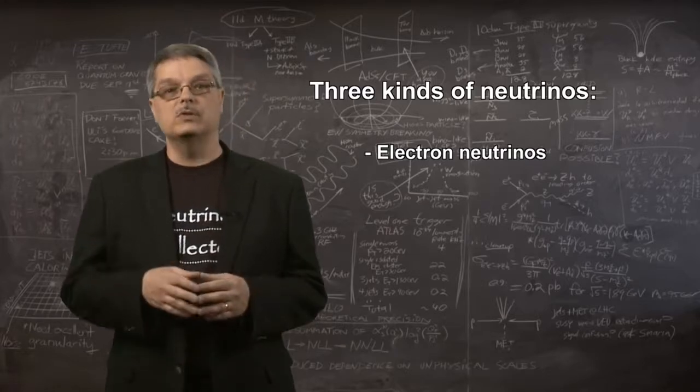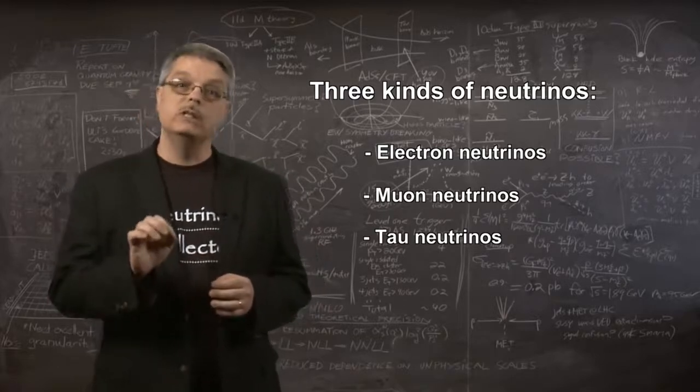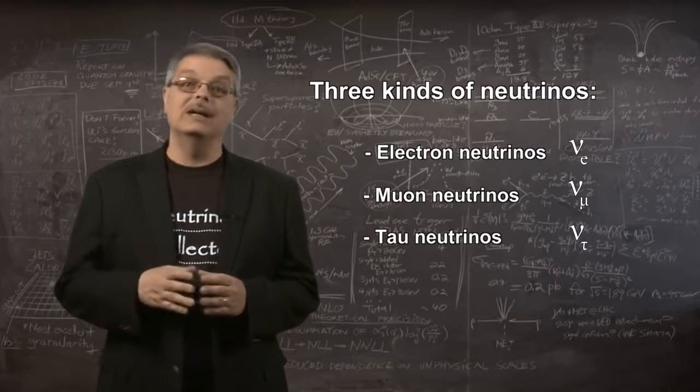Accordingly, these other types are called muon neutrinos and tau neutrinos. Scientists use the lowercase Greek letter nu to indicate a neutrino, with a subscript to tell you what kind it is.